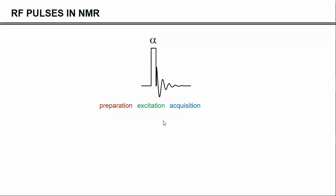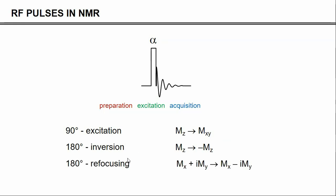Now, if this angle alpha equals 90 degrees, then the pulse is referred to as an excitation pulse, exciting the magnetization from z to xy. If alpha is 180 degrees, then it's called an inversion pulse, inverting the magnetization from plus z to minus z. If the magnetization is already in the xy plane, then the 180 degree pulse is referred to as a refocusing pulse, inverting one of the two components in the transverse plane, leading to a spin echo.